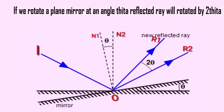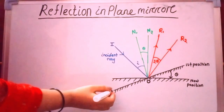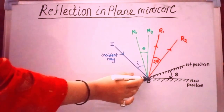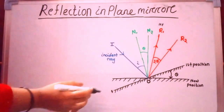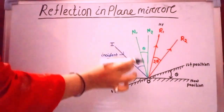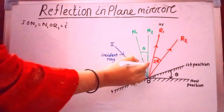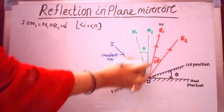The last topic of this video: if a plane mirror is rotated by an angle theta, the reflected ray will be rotated by 2 theta. Consider a plane mirror at an initial position with an incident ray falling on it. After reflection, it goes along OR1 — the first reflected ray. Drawing the normal ON1 at the point of incidence, angle of incidence ION1 equals angle of reflection N1OR1, both equal to angle I, since angle of incidence equals angle of reflection.